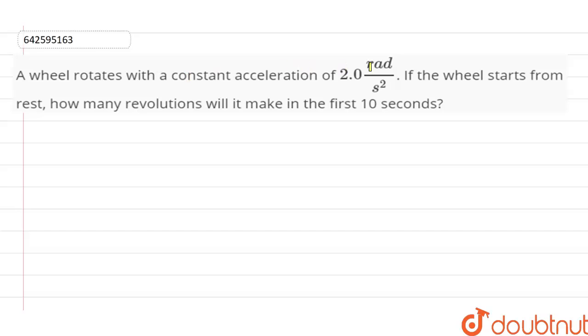A wheel rotates with a constant acceleration of 2 radian per second squared. If the wheel starts from rest, how many revolutions will it make in the first 10 seconds?